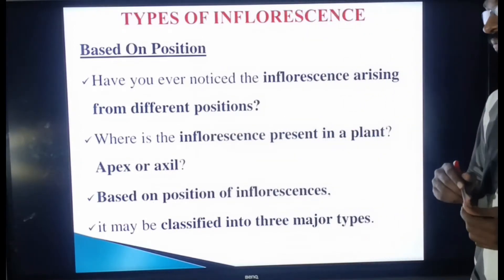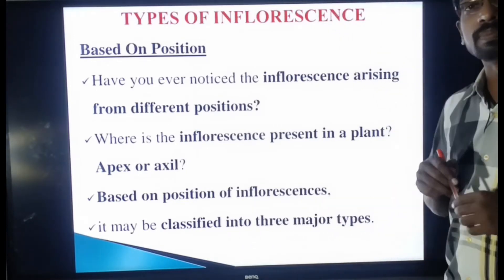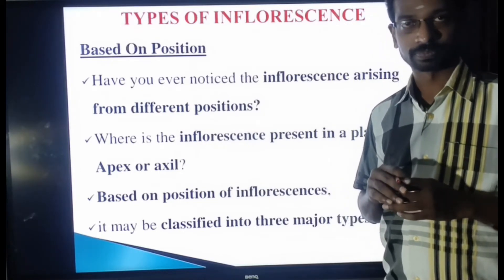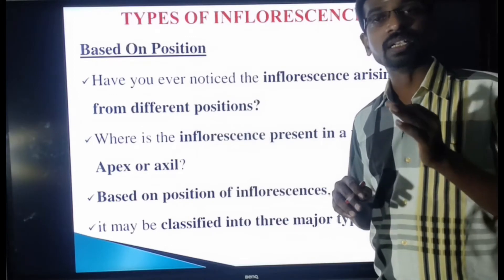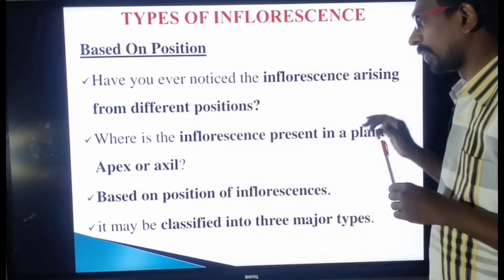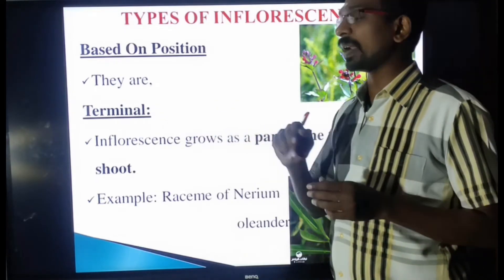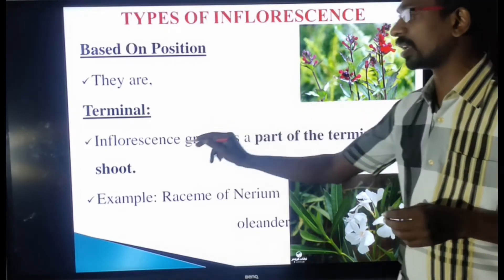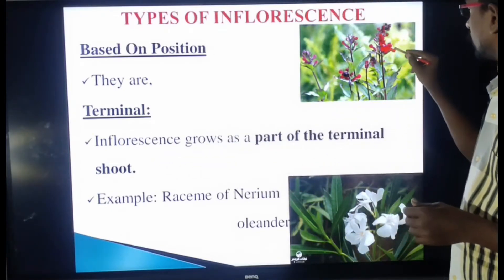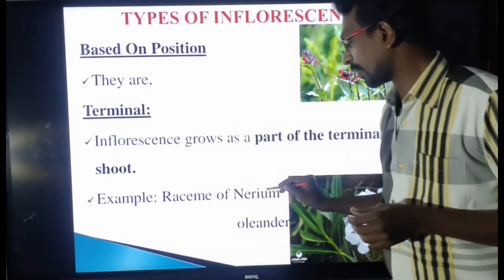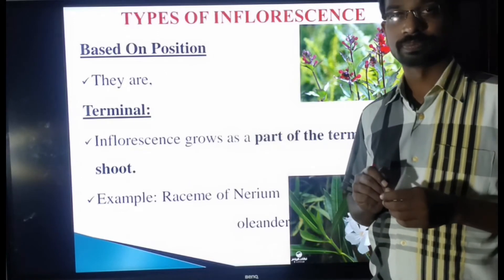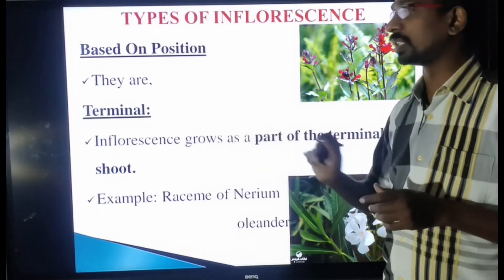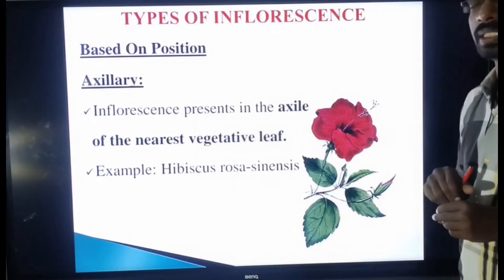Based on the position of the inflorescence, it may be classified into three major types: terminal, axillary, and cauliflorous. The first type is terminal inflorescence — the inflorescence grows as part of the terminal zone, that is the terminal end. Example: raceme of Nerium oleander. The inflorescence grows as part of the terminal zone — that is terminal inflorescence.